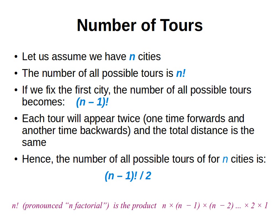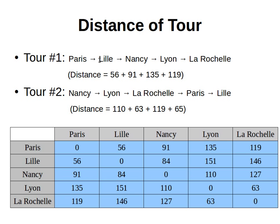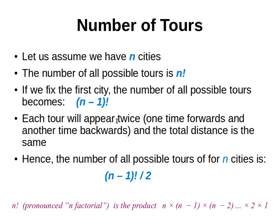As a quick reminder: if we go from Lille to Nancy to Lyon to La Rochelle, and then from La Rochelle to Lyon to Nancy to Lille, this is the exact same distance because it's the same road just in the opposite direction. So that helps us cut down the number of possible tours by half.